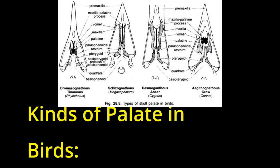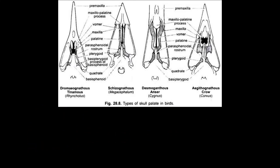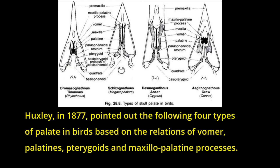Kinds of Palate in Birds. Huxley, in 1877, pointed out the following four types of palatine birds based on the relations of vomer, palatines, pterygoids and maxillopalatine processes.